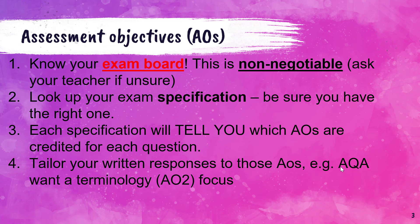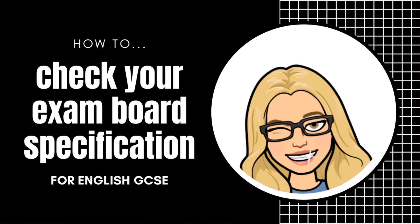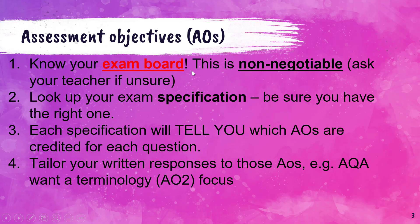Before we go into morality, as a reminder - I looked at this last week in a lot of detail - if you haven't already seen it, please check out my last video. It's all about how to check your exam board specification for the English GCSE. You need to know your exam board and use that to work out the assessment objectives, the AOs, required for your essay answers. That will differ depending on whether you're with AQA, EdExcel, or OCR.